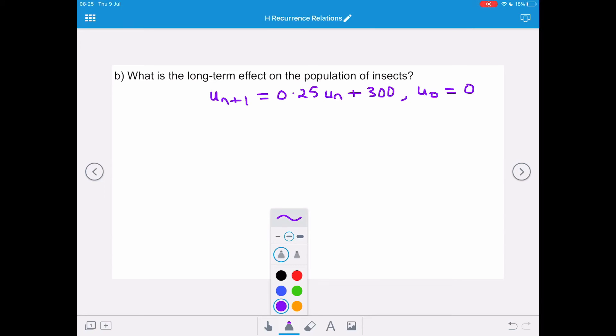Now, if we compare that to our un+1 equals aun plus b, the a value is what's important in determining whether or not there's a limit to the sequence. And as a equals 0.25, and we know that the condition for there being a limit is that a has to lie between negative 1 and 1, because a at 0.25 does lie between negative 1 and 1, there is a limit for this recurrence relation.